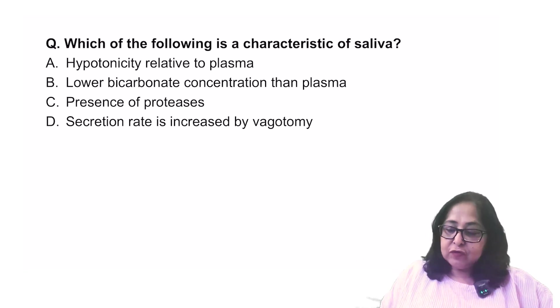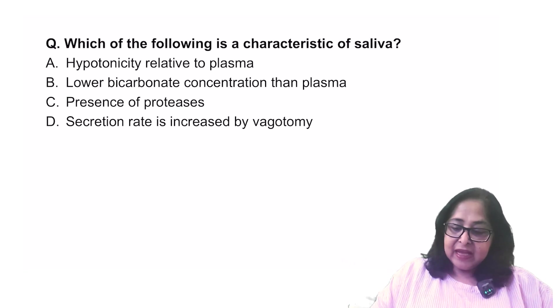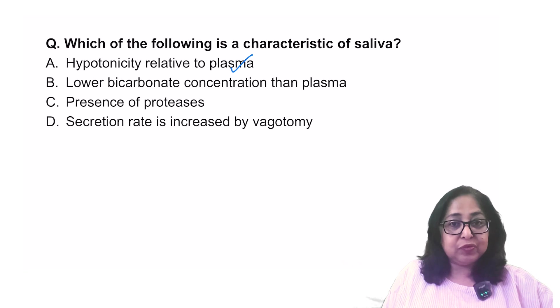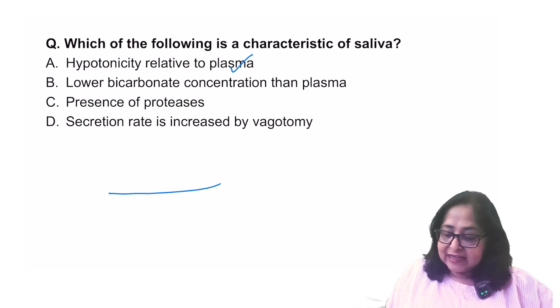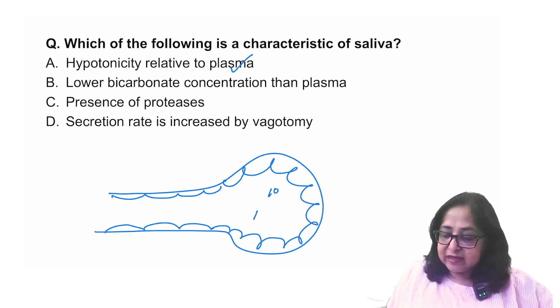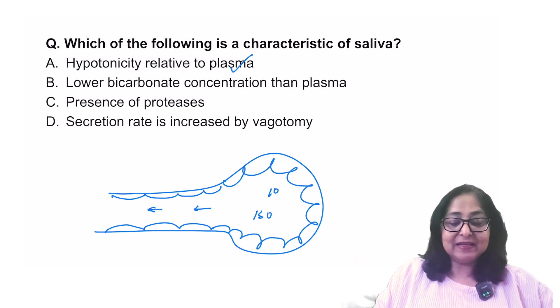Let's have a look at the next question. It says, which of the following is a characteristic of saliva? Hypotonicity relative to plasma? This is true. When you look at the salivary secretion, the primary secretion in the acini is isotonic with plasma. The primary secretion here is isotonic but as it flows through the ducts, there is a modification which takes place.